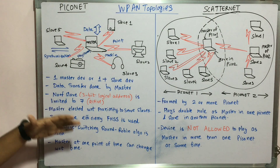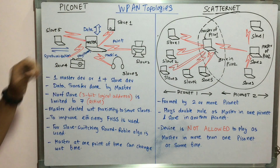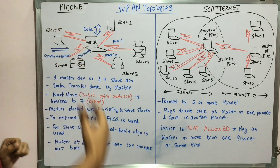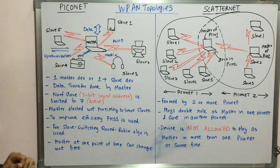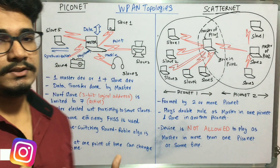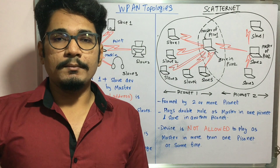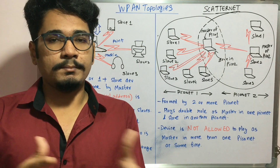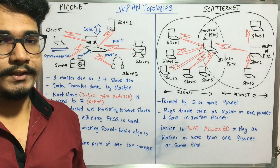To improve bandwidth efficiency, we use FHSS — that is, frequency hopping spread spectrum technique. For slave switching, which slave the master serves at any point of time is decided by a round robin algorithm. The master can only serve one slave at a time, and it can change over time — if the master device moves far away from a slave, a different master can be elected, just like electing a new president after a tenure ends.